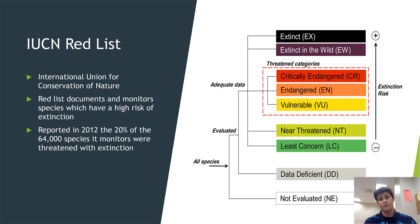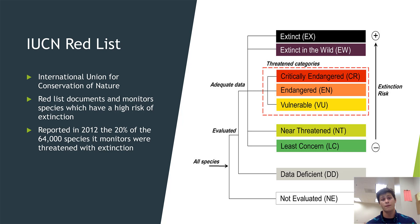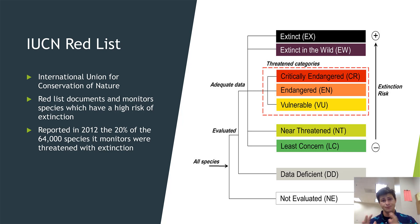The first extinction risk category is your vulnerable species, which is basically analogous to the threatened species we talked about previously. While the populations of these species are still fairly high, they are dropping swiftly — so swiftly that they may soon be threatened with extinction if action is not taken. Then we have endangered, which we already defined: species with populations so low that they are very threatened with extinction. Finally, we have an extra term in that extinction risk category — critically endangered species.